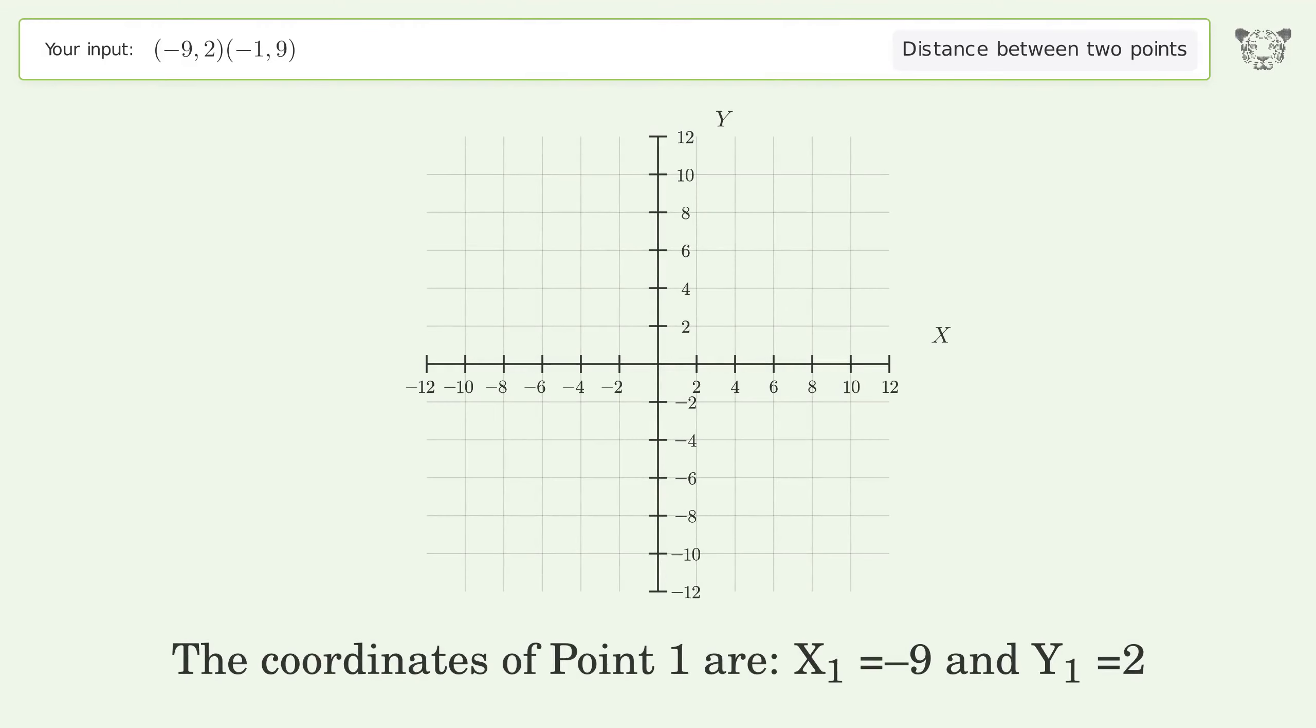The coordinates of point 1 are x1 equals negative 9 and y1 equals 2. The coordinates of point 2 are x2 equals negative 1 and y2 equals 9. d is the distance between the two points.